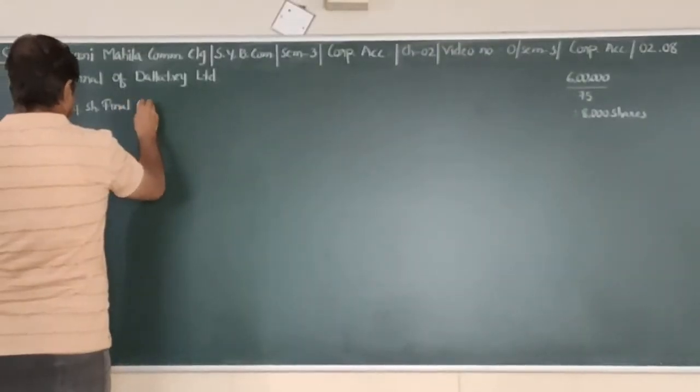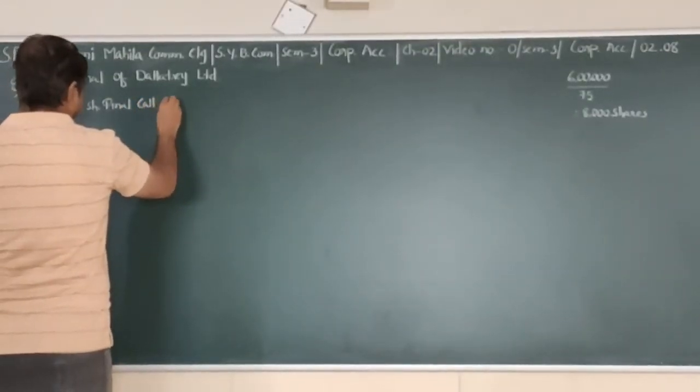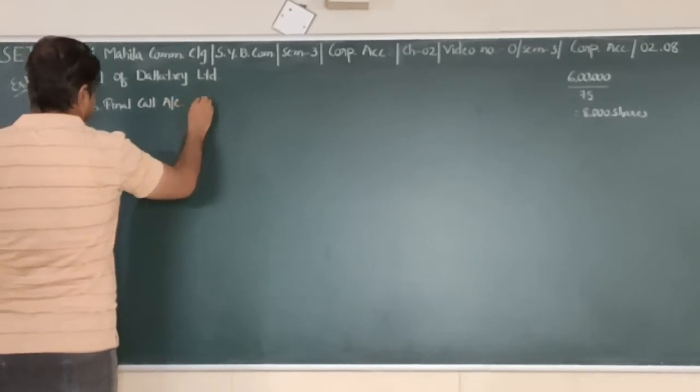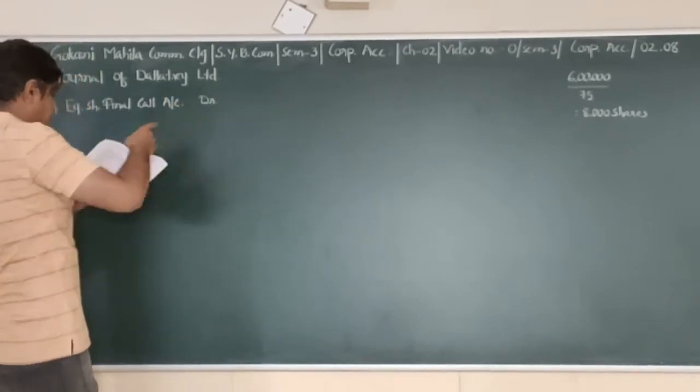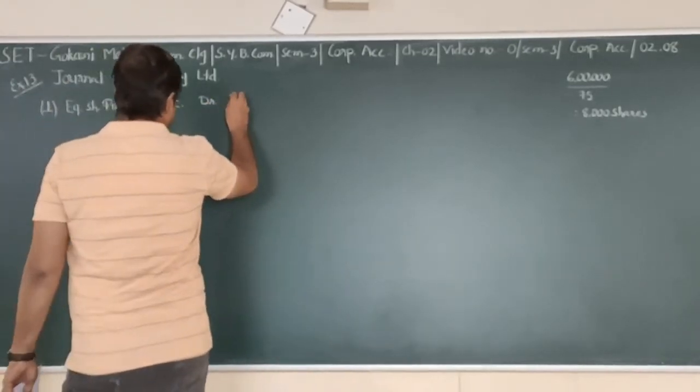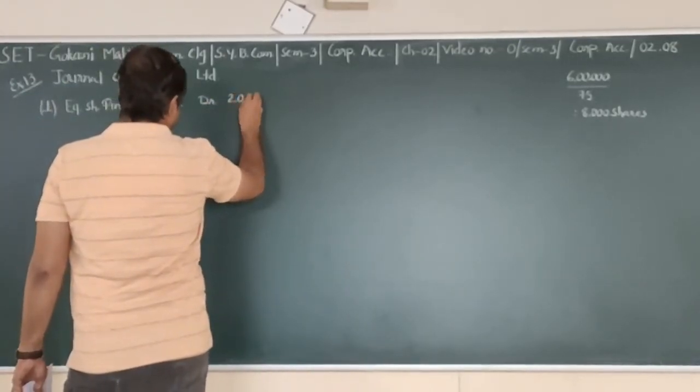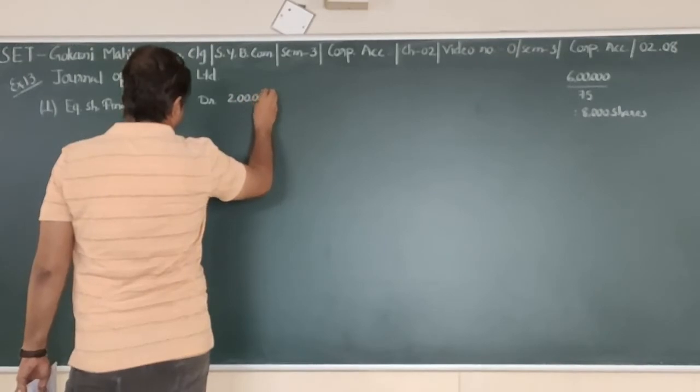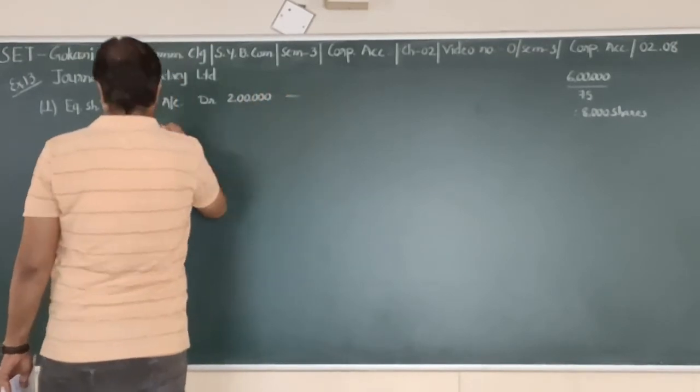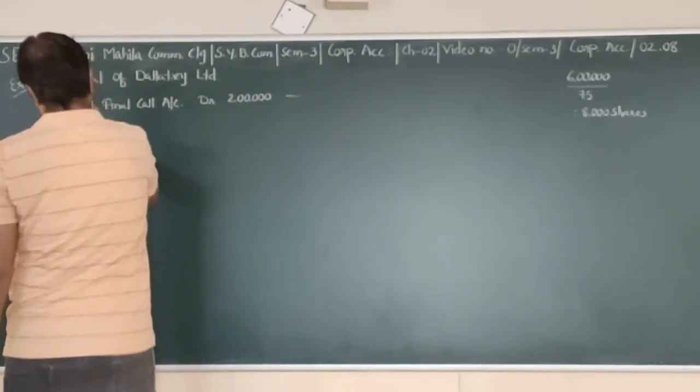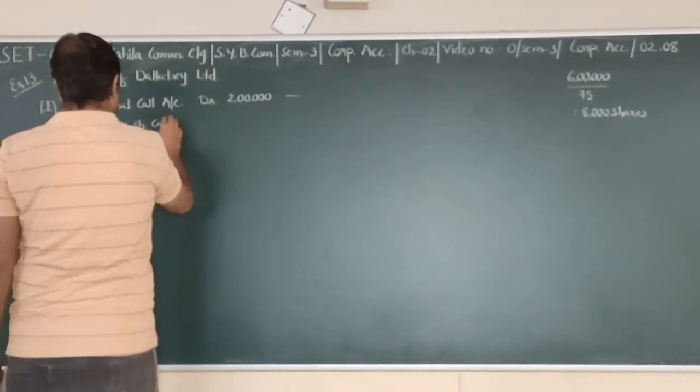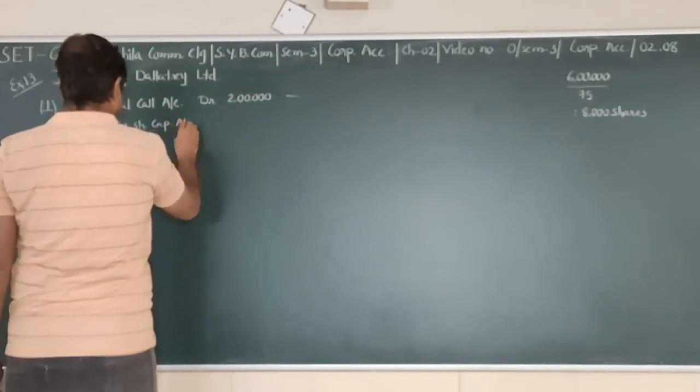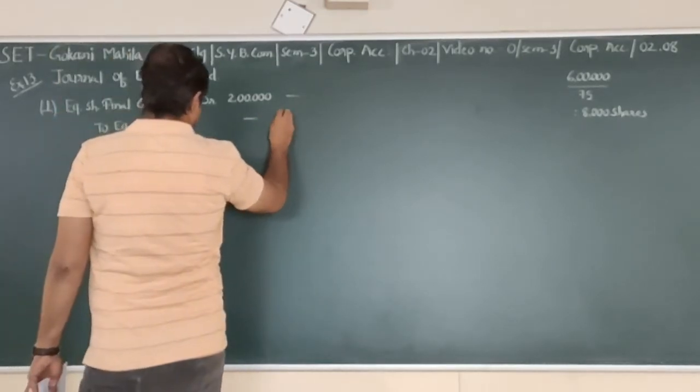Final call temporary will be equal to share call. The call is 25. Now this is the value of the cost. So entry one: 8000 shares into 25 rupees.